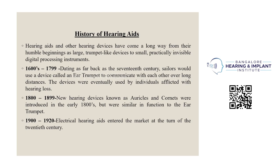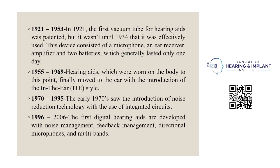These ear trumpet devices were eventually used by individuals afflicted with hearing loss. In 1800 to 1899, new hearing devices known as auricles and corners were introduced in the early 1800s, but were similar in function to the ear trumpet. In 1900 to 1920, electrical hearing aids entered the market at the turn of the 20th century. In 1921, the first vacuum tube hearing aid was patented, but it was not until 1954 that it was effectively used.